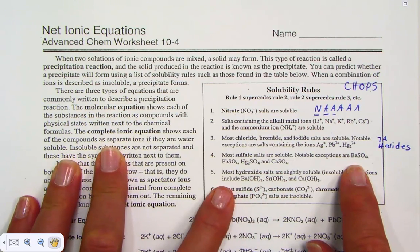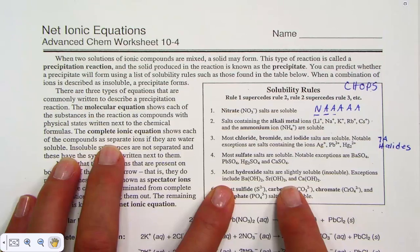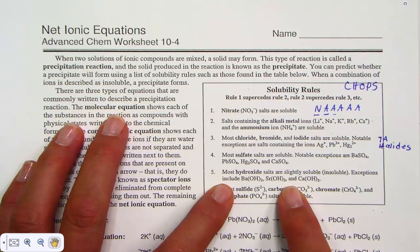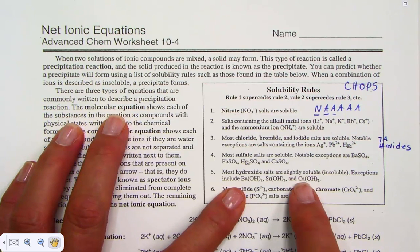Rule five: Most hydroxides are slightly soluble to insoluble. Exceptions include barium, strontium, and calcium.